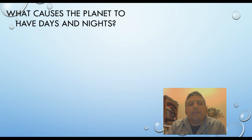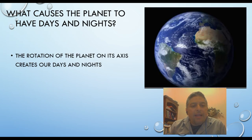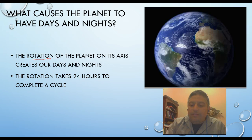Now that we have done the technical things, let's get started with the lesson. First we need to know what causes the planet to have days and nights. In very simple terms, the rotation of the planet is the one responsible for everything. It's the one that creates days and nights. The rotation takes 24 hours to complete a cycle. The planet spins from left to right, or west to east, counterclockwise, and that takes 24 hours to do a whole rotation.